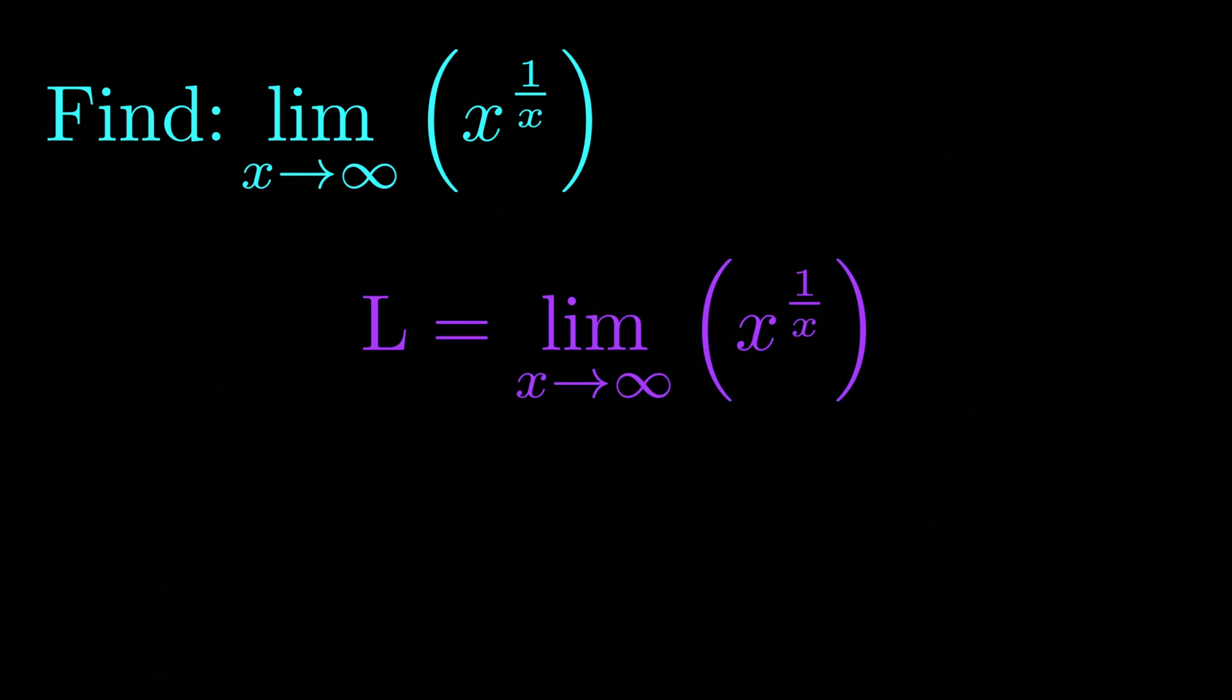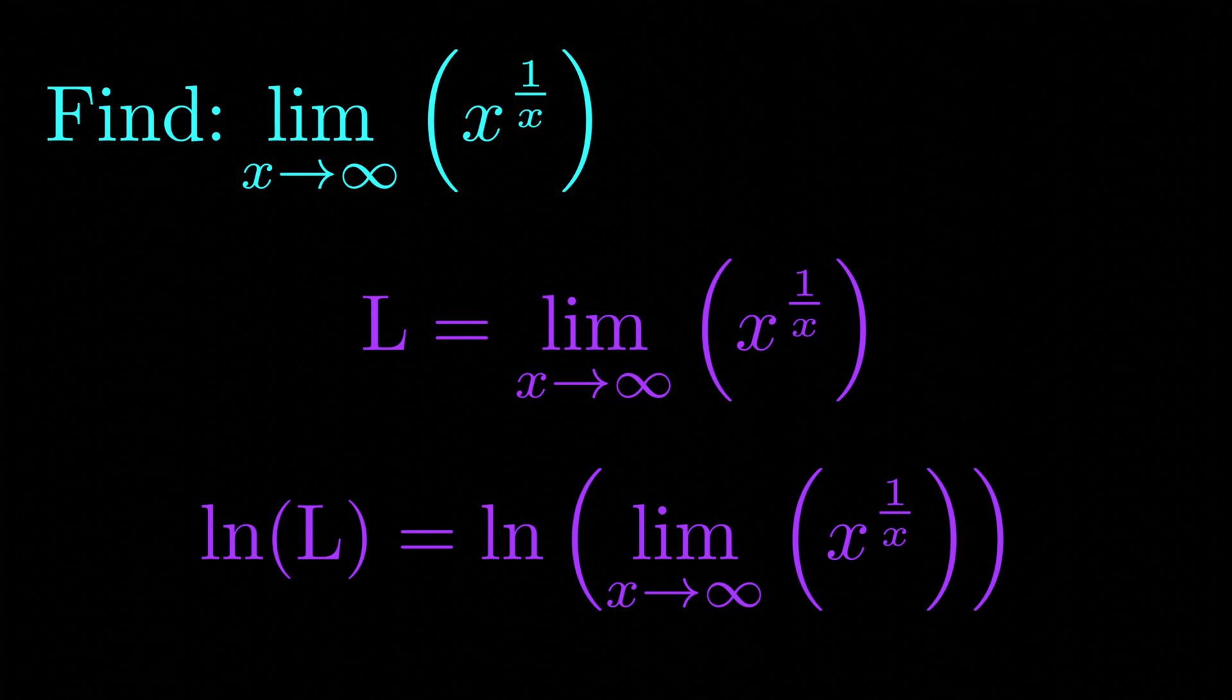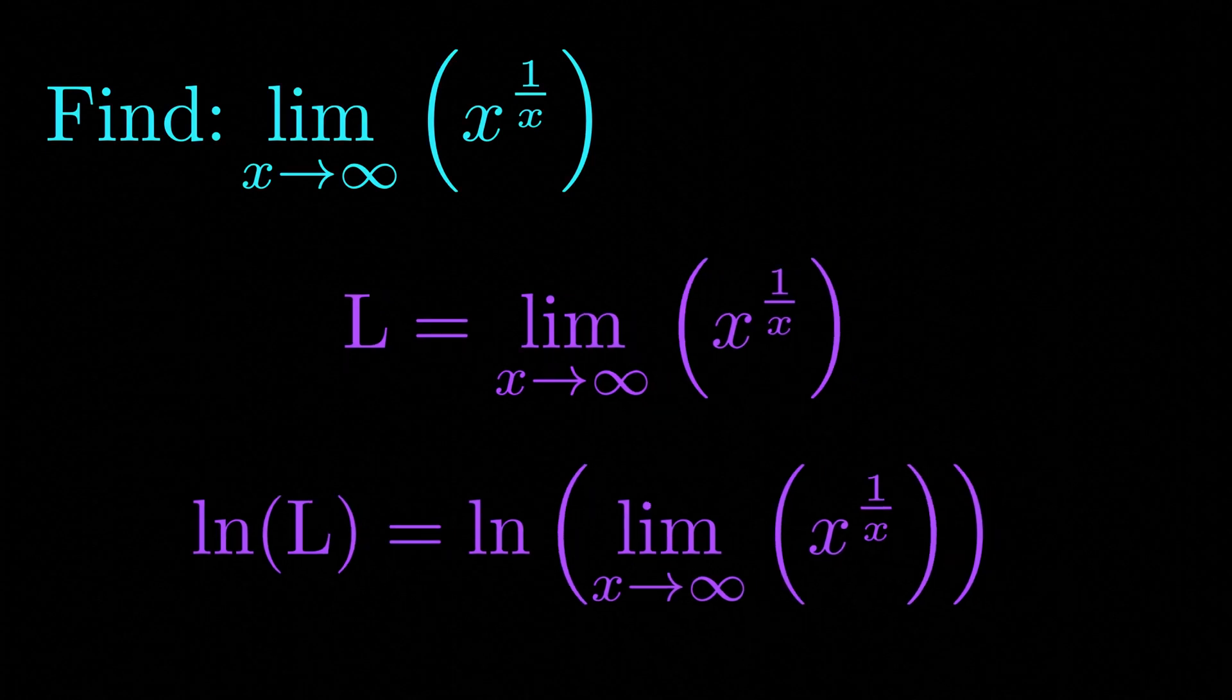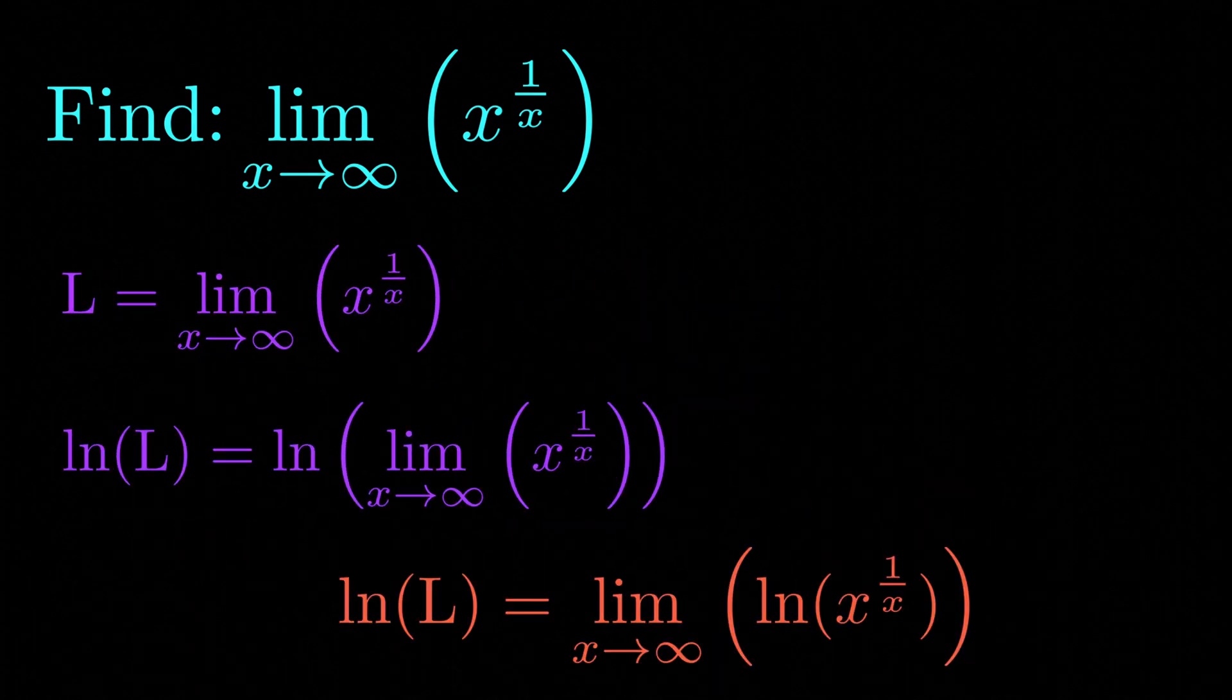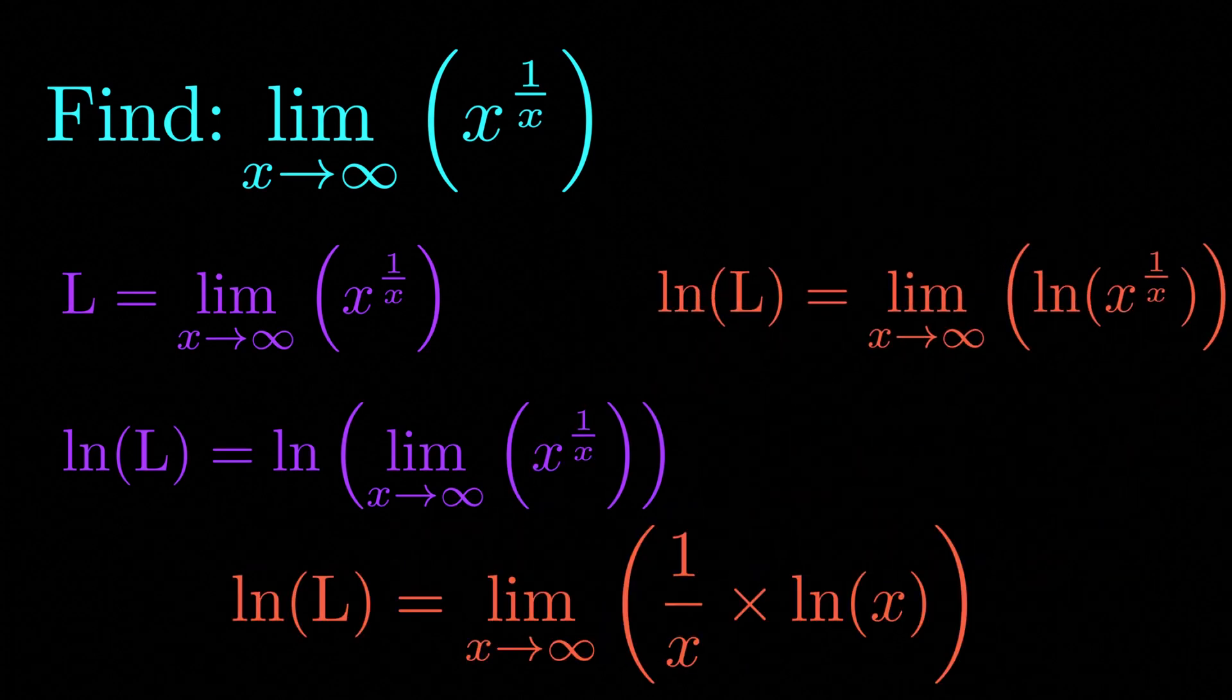Let's begin by setting this limit equal to some value L. Now let's take the natural logarithm of both sides of this equation. We can go ahead and move the natural logarithm inside the limit. Now we can use the properties of the natural logarithm to bring the exponent down to the front.